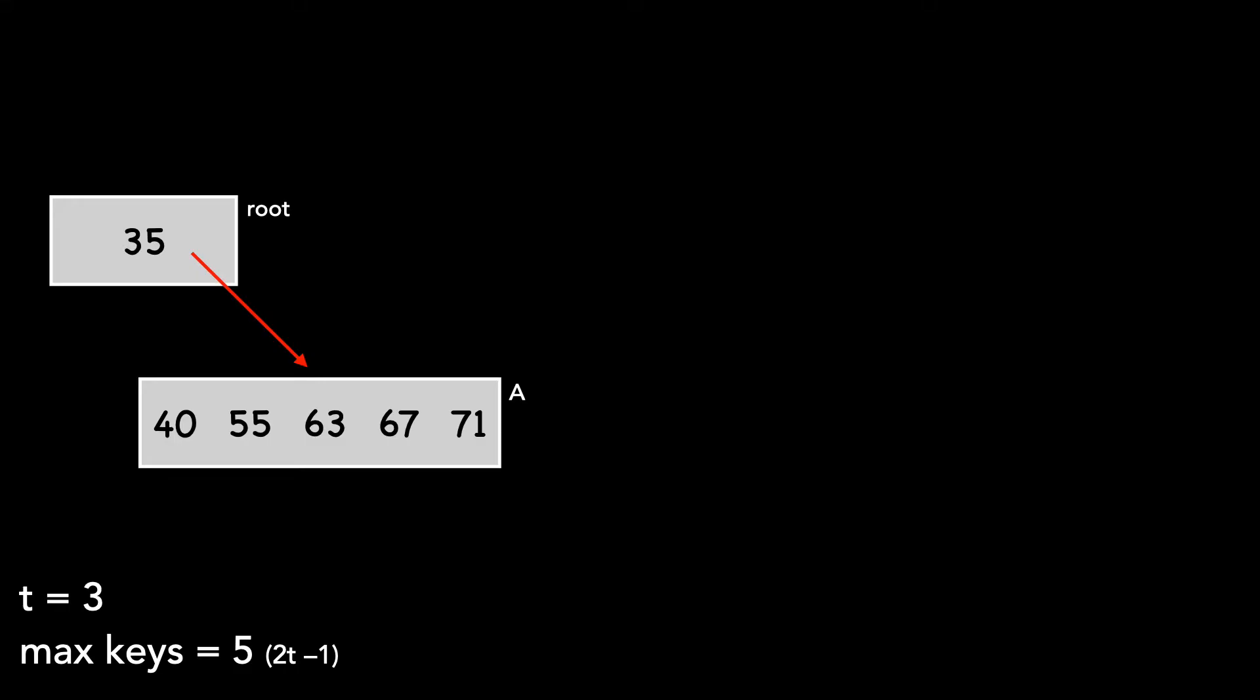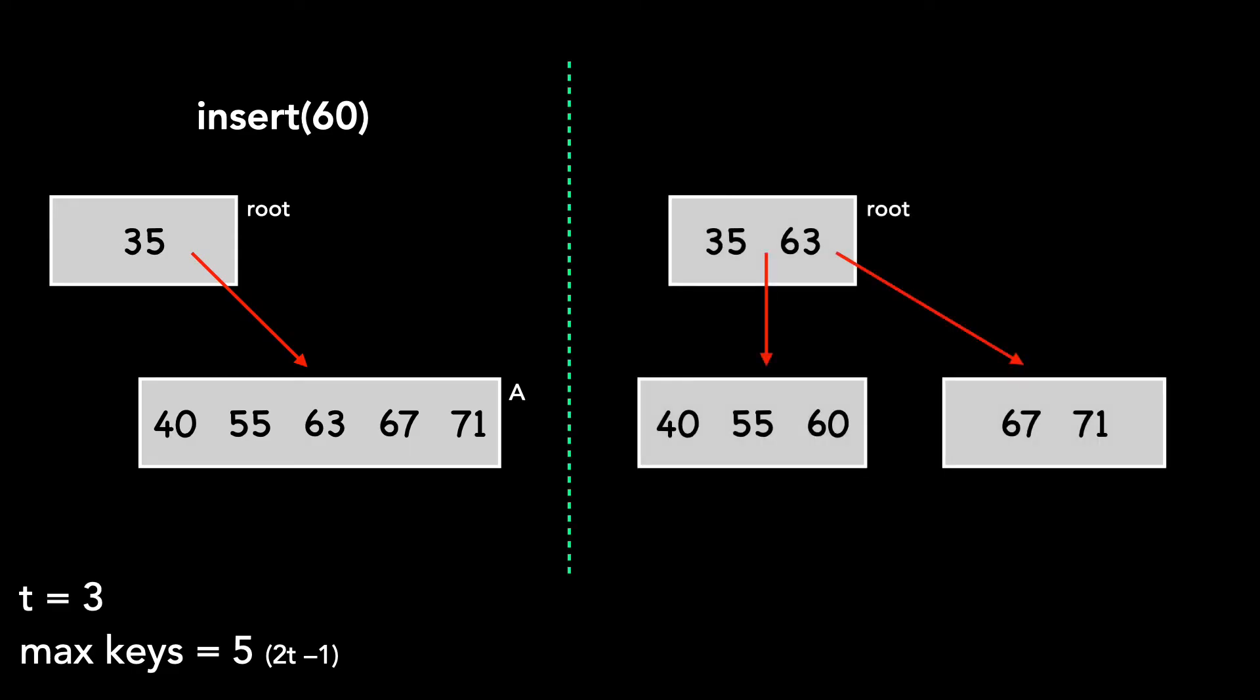We want to insert an additional key with a value of 60. We would insert the key into node A, but as you can see, it has five keys and is full. We split A into two nodes and move the median value, 63, into the parent.